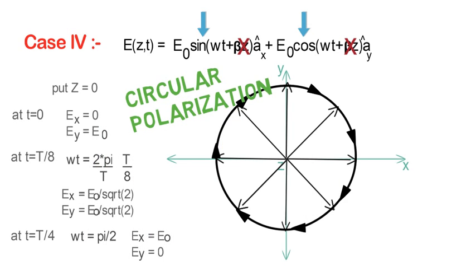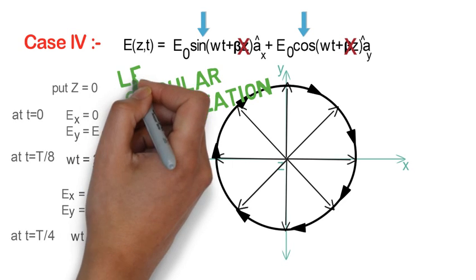Now to find the sense of rotation, put the thumb pointing towards propagation direction and close the fingers along advancing time. The hand that satisfies this defines the left or right circular polarization. In this case, left hand is satisfying this, so the wave is left circularly polarized.